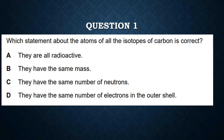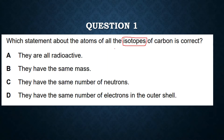Question number one: which statement about the atoms of all the isotopes of carbon is correct? First we have to know the definition of isotopes. Isotopes are the atoms of the same element.